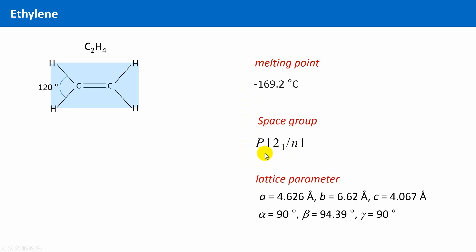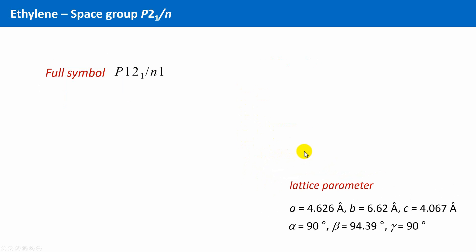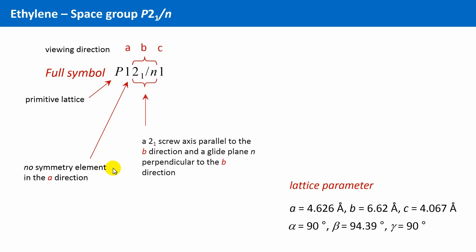Let's shortly recap what P21/n means. P is a primitive lattice. Then, the symmetry elements are specified according to three viewing directions. The first is a, and there is no symmetry element. In the second viewing direction there is a 2₁ screw axis parallel to the b direction, and a glide plane n perpendicular to the b direction, and finally there is no symmetry element in the third direction.